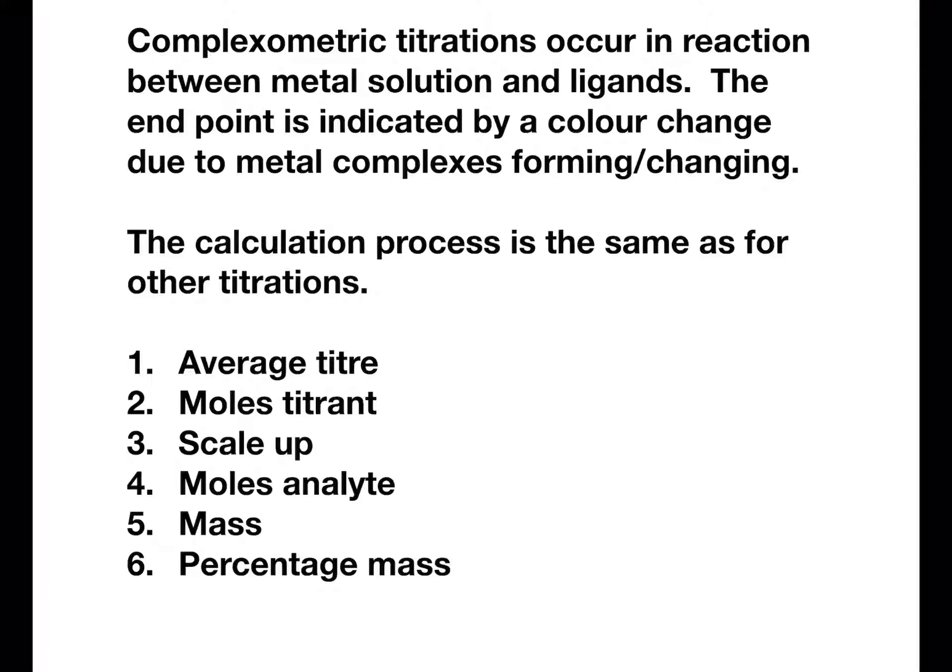Compleximetric titrations happen when you react a metal solution with ligands. The end point is indicated by a colour change which is due to the metal complexes which form or change. The calculation process is the same as for all other titrations and is generally looking to find some mass or percentage mass of metal.